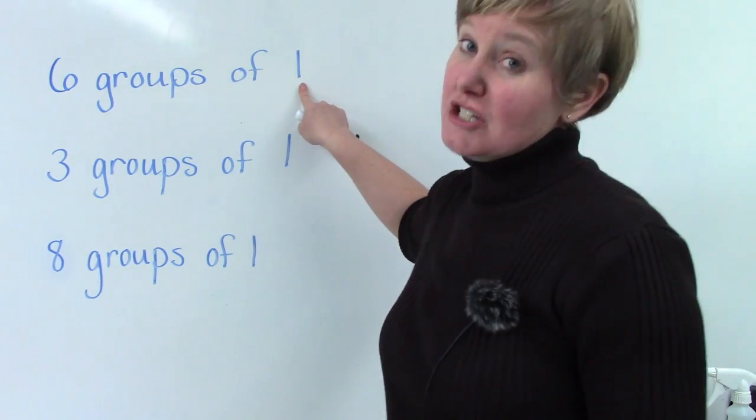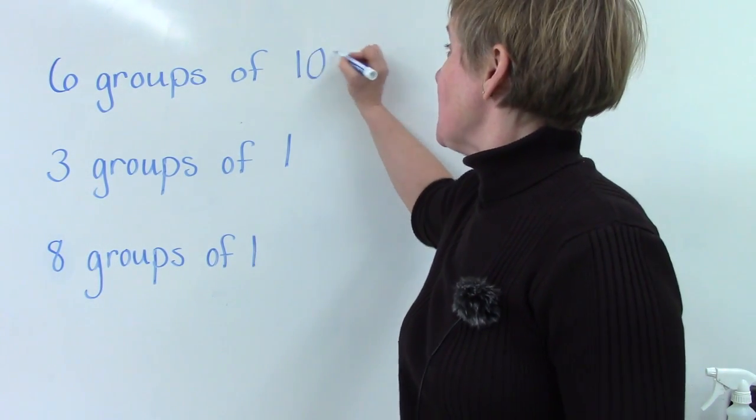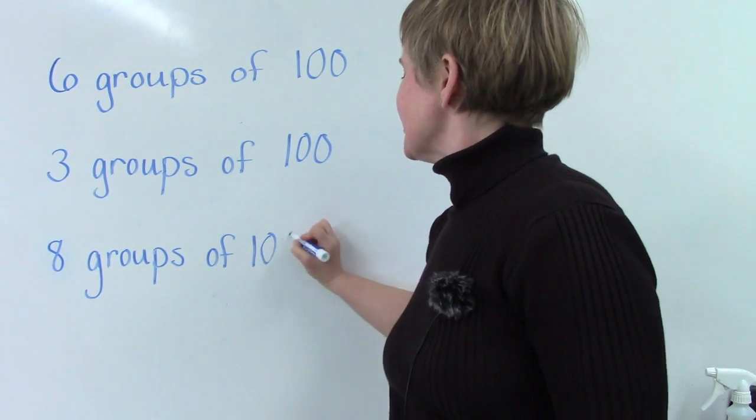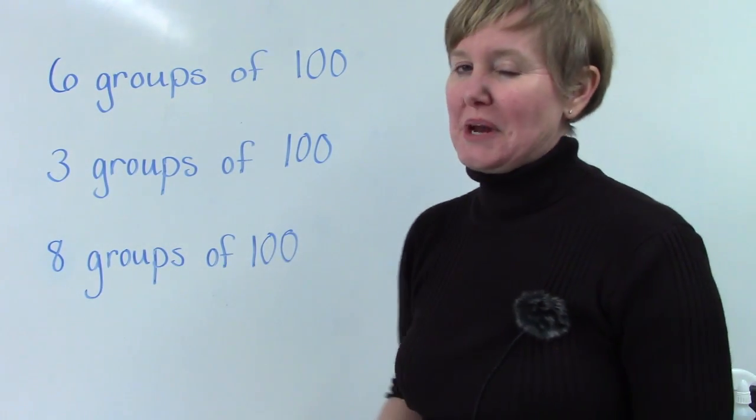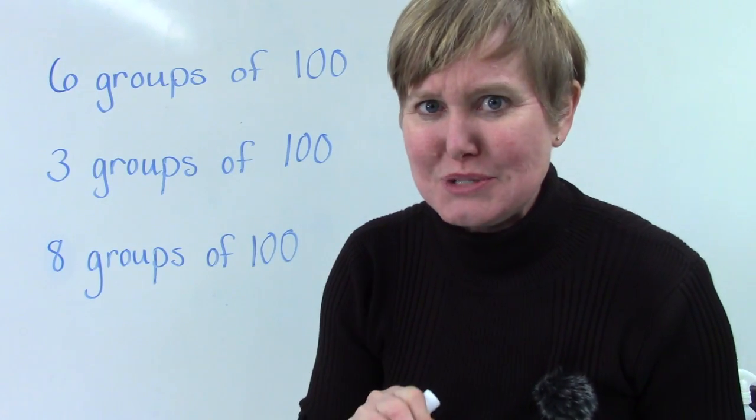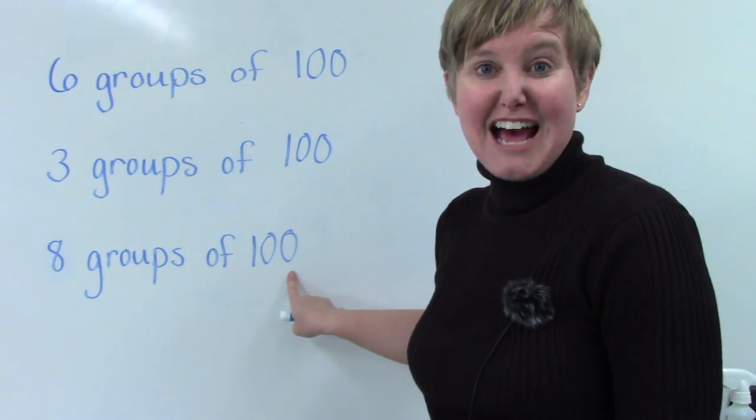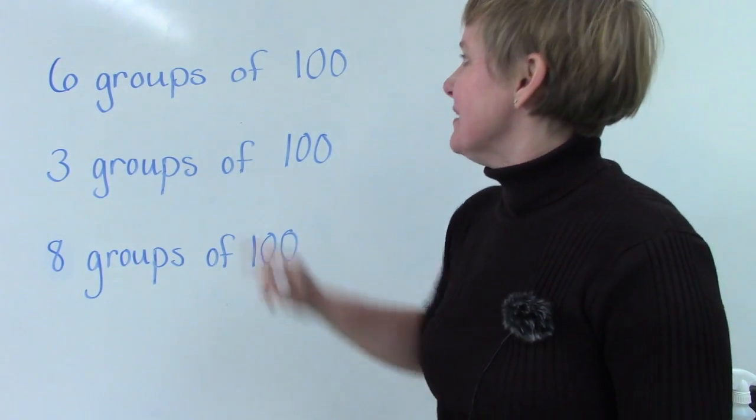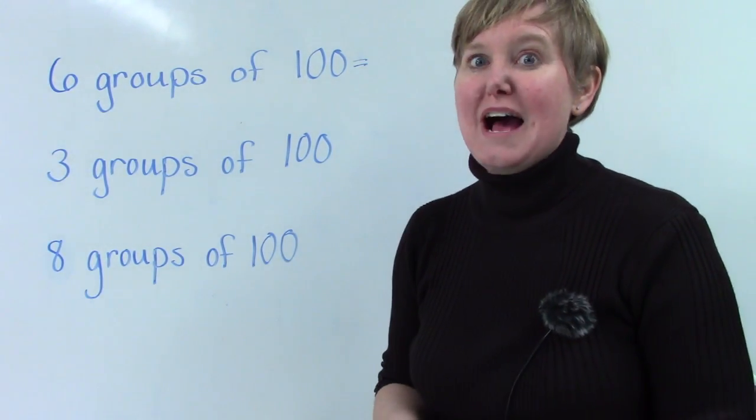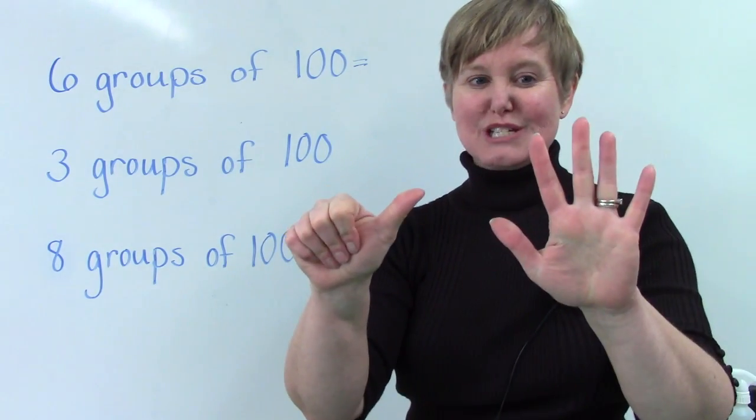So I'm going to change this one to a one hundred. When I changed my one to a one hundred, I put two zeros on the back to show our tens place and our ones place. All right, six groups of one hundred. Let's get out those six fingers.